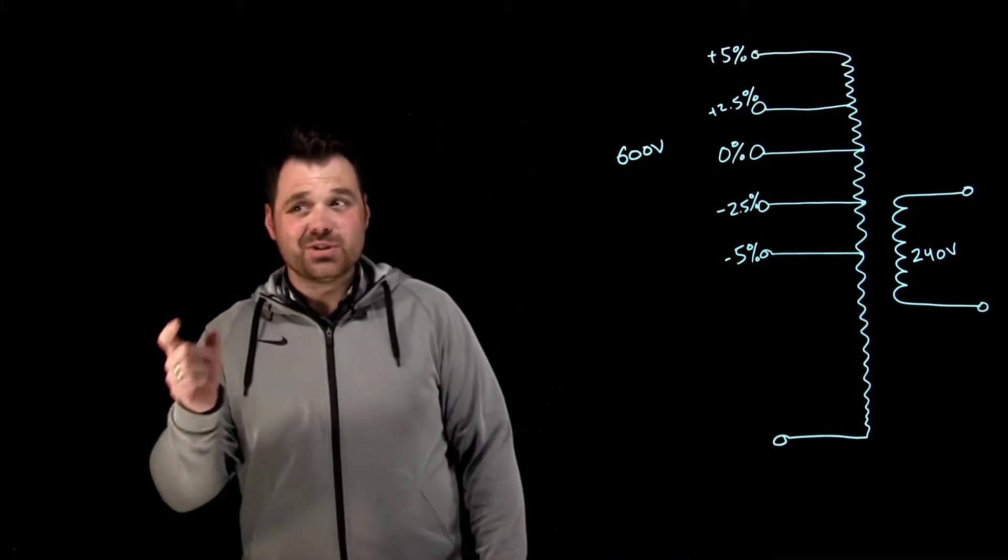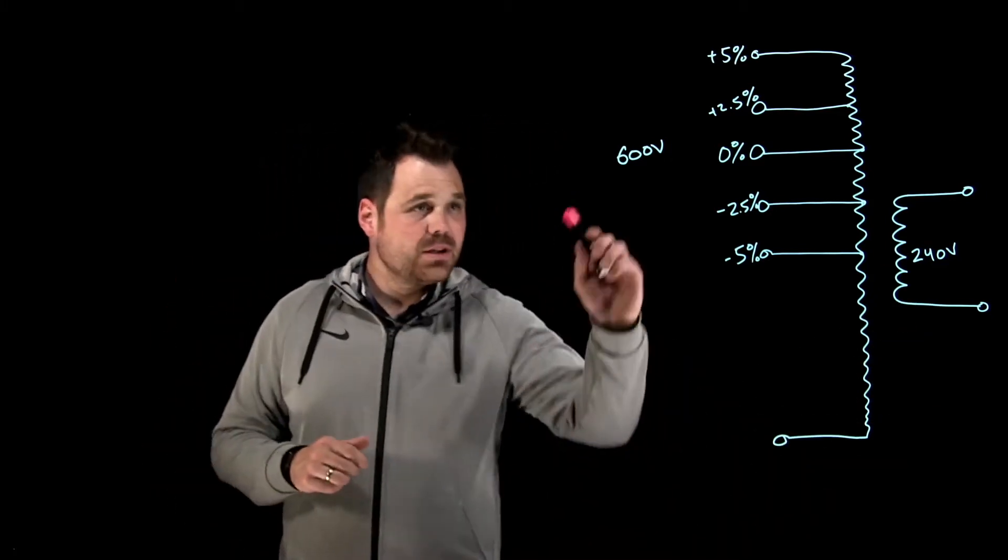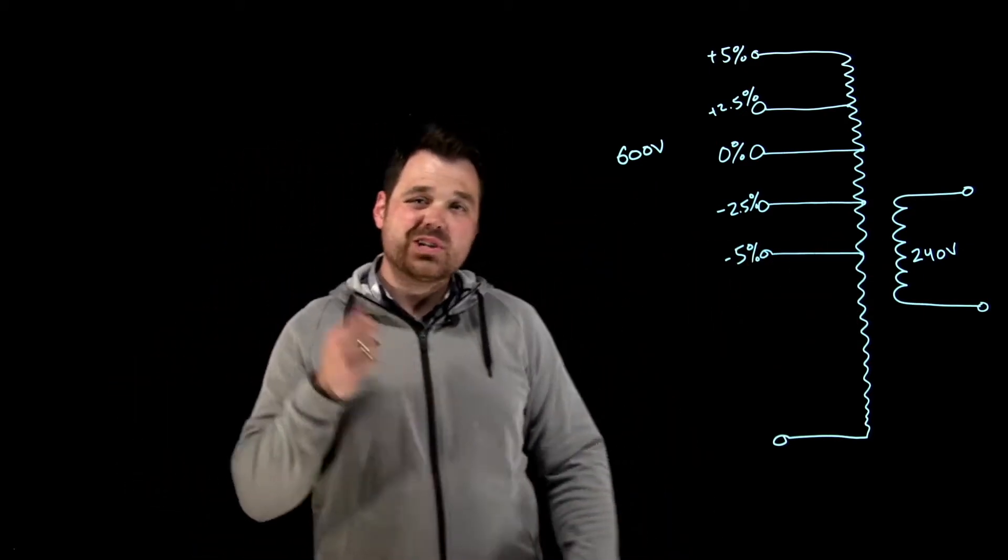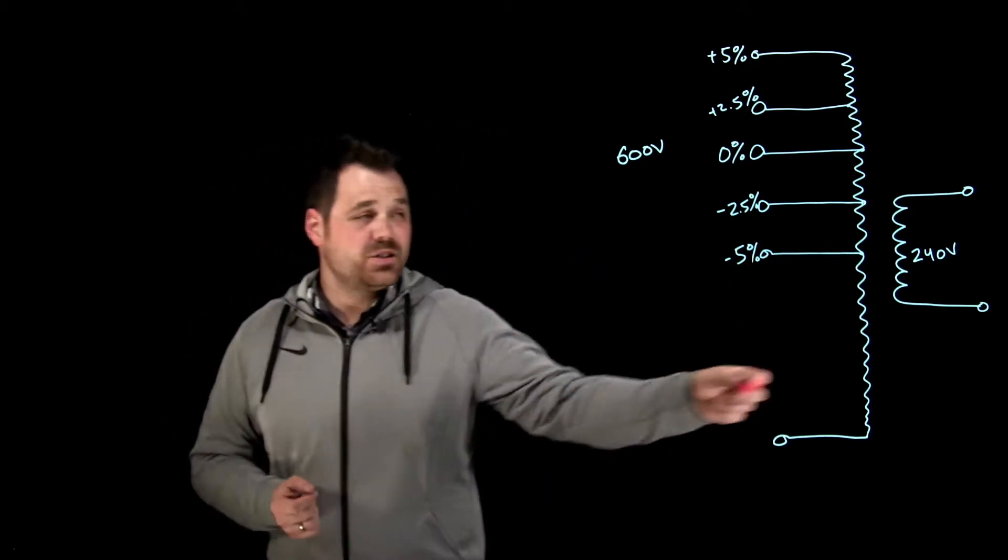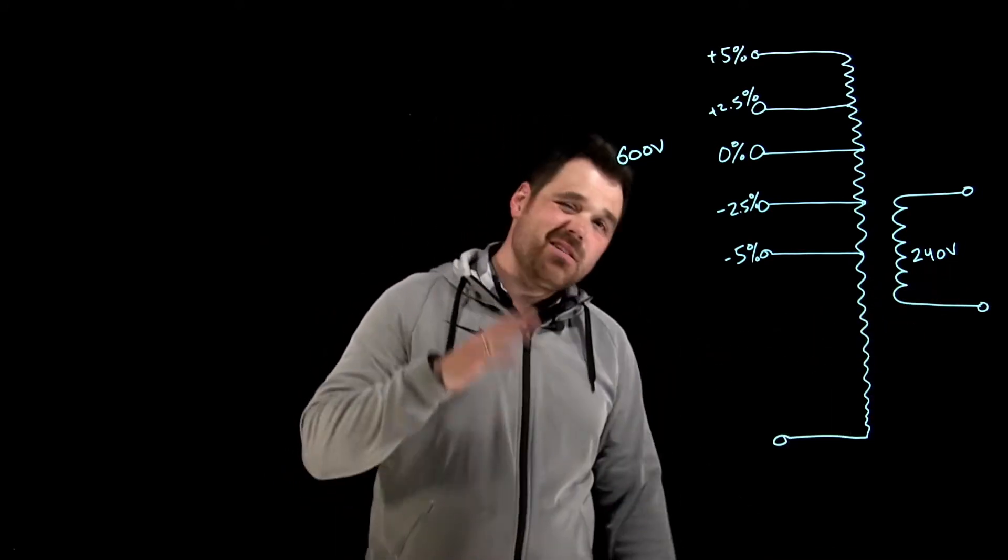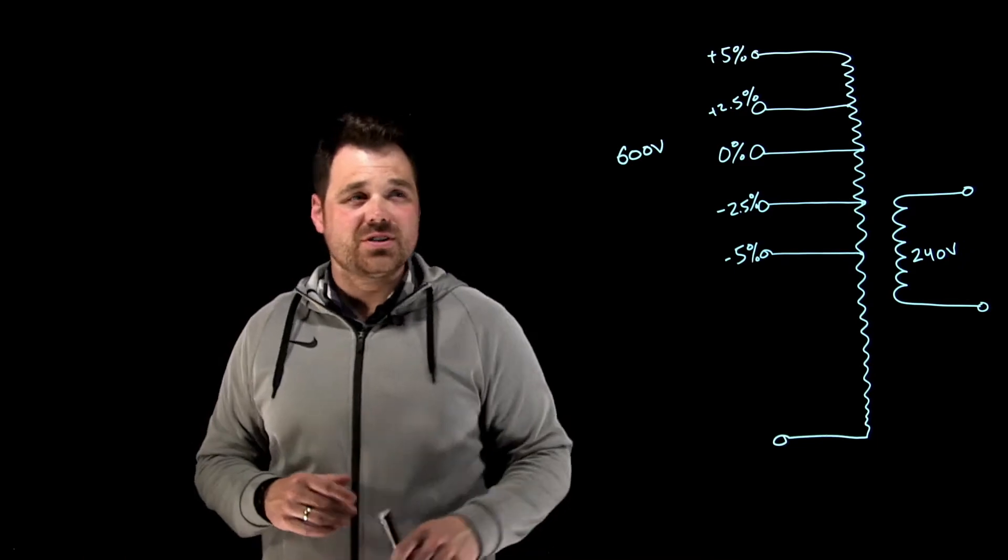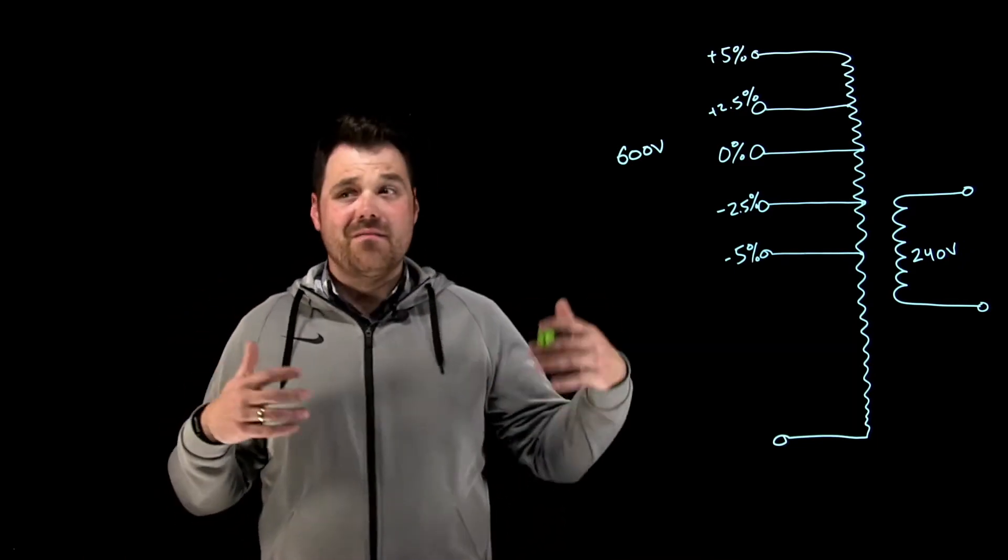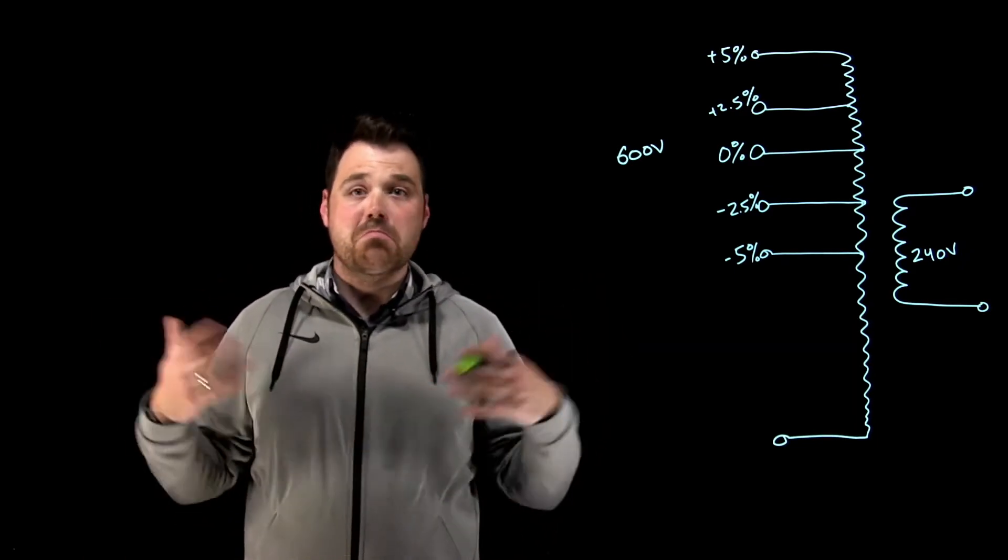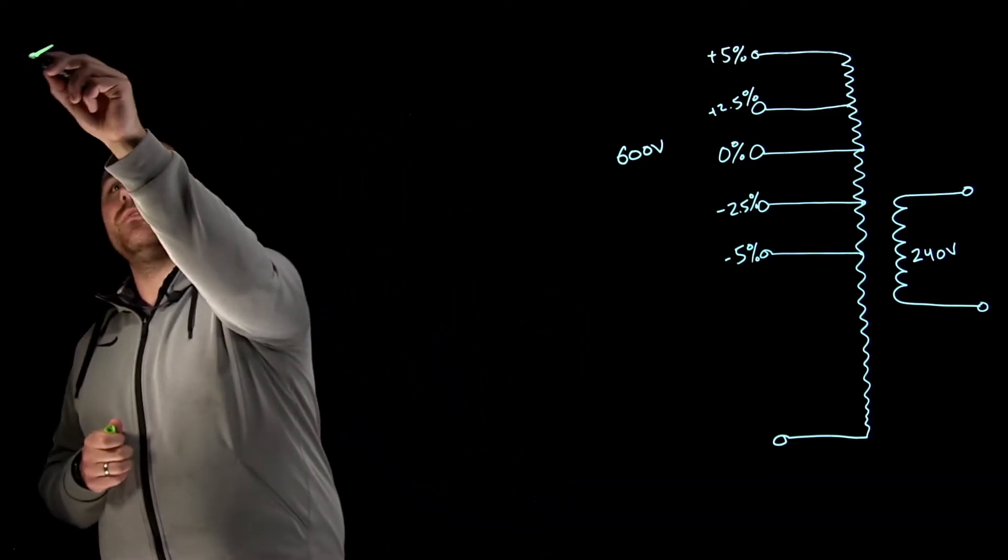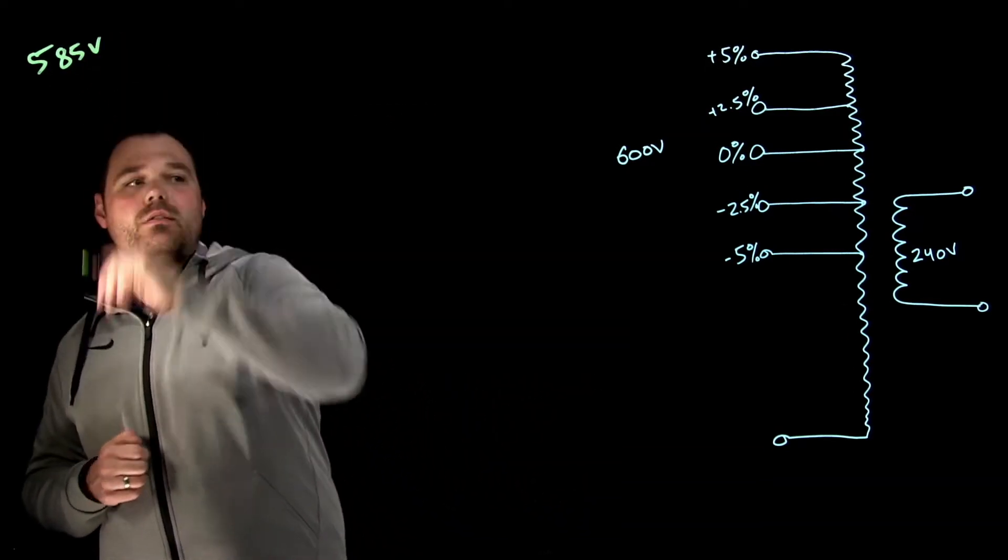So let's do some examples. So I've got this transformer, it's a 600 to 240 volt transformer, I need my 240 volt output. Let's say, hey, we are super far away from the distribution transformer. Maybe we only have 585 volts. That's what I can get. I can only apply 585 volts. Oh man, that's not quite enough voltage.